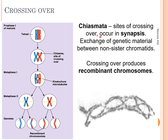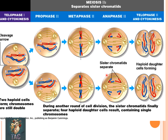Chiasma is the site where crossing over occurs during synapsis — it is the exchange of genetic material between non-sister chromatids, resulting in recombinant chromosomes. In meiosis two, there is no DNA replication — this is a very important point to keep in mind.